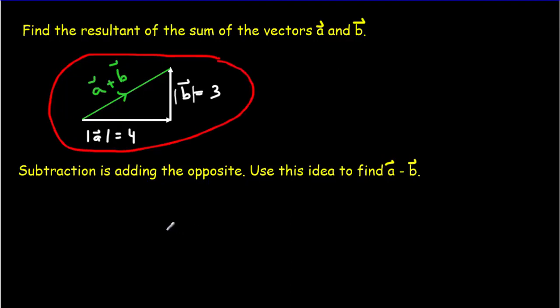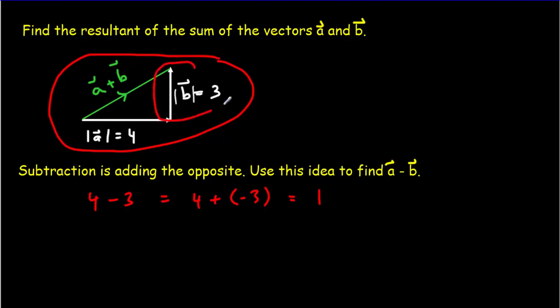We know that subtraction is just adding the opposite. When we had regular numbers and wanted to go 4 minus 3, we could think of that as 4 plus minus 3 to get an answer of 1. What do you think the opposite would be with a vector? What's the opposite of vector b equals 3? Think about what the vector a minus b would look like if we were to do another scale diagram below. I'm not going to take up the answer right now — just want you to think about it before we head into the video.